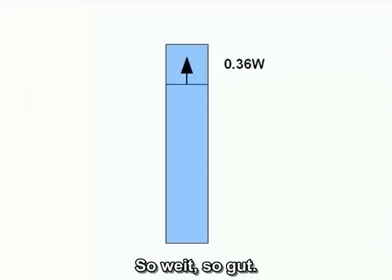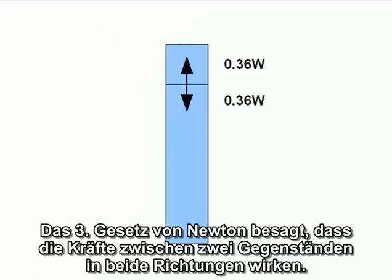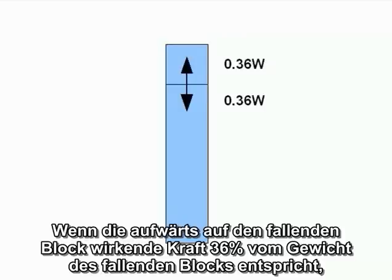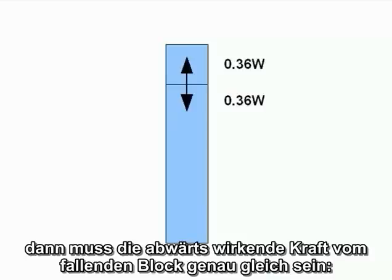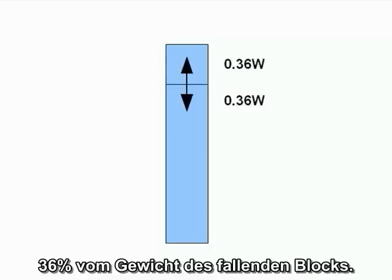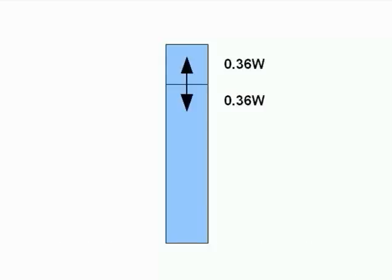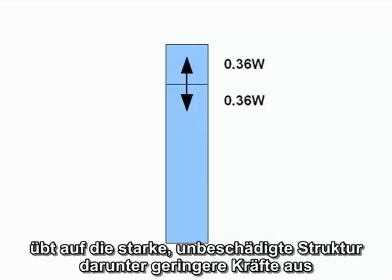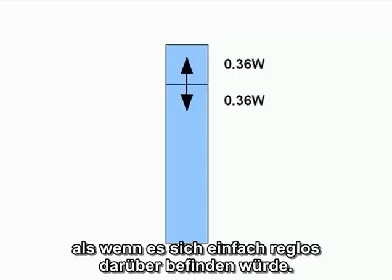So far, so good. But now turn it around. Newton's Third Law says interactions between objects work both ways — the forces two objects exert on each other are always equal and opposite. If the upward force acting on the falling block is 36% of the weight of the falling block, the downward force exerted by the falling block must be exactly the same: 36% of the weight of the falling block. In other words, the top section of the building is exerting less force on the lower, stronger, undamaged structure than it would if it were simply sitting motionless.